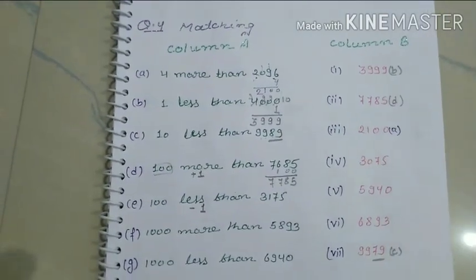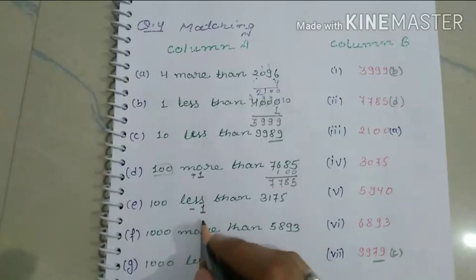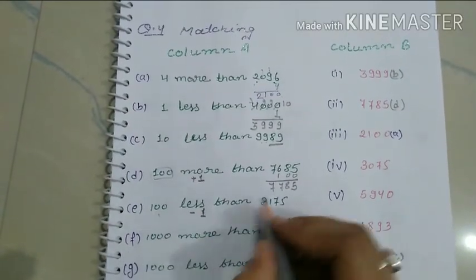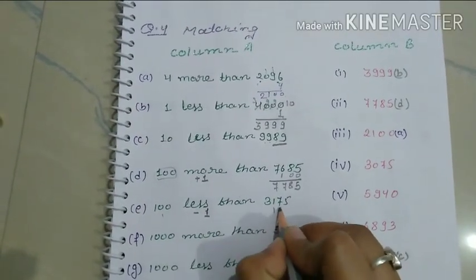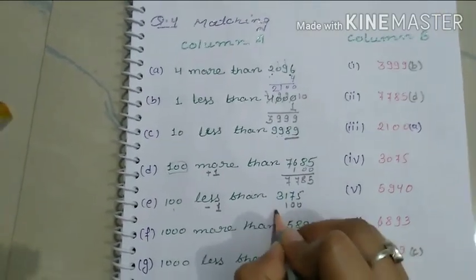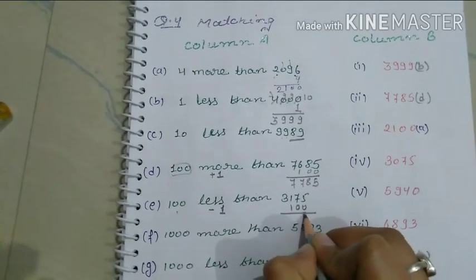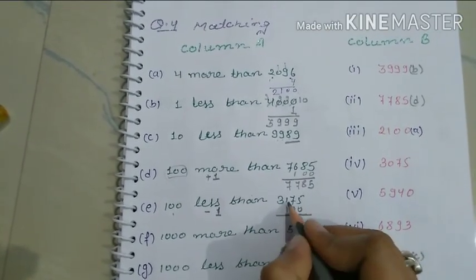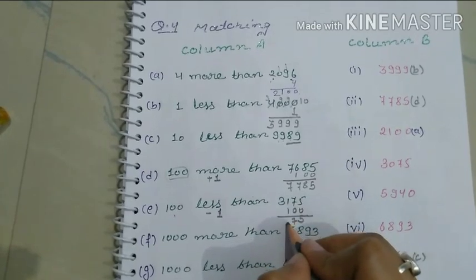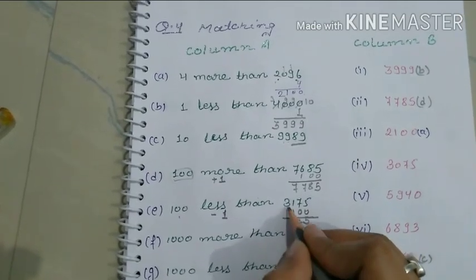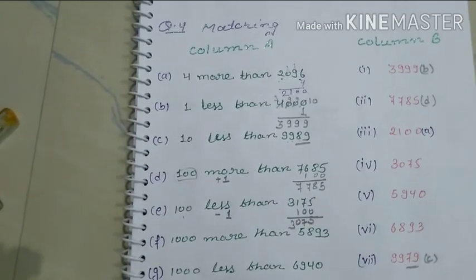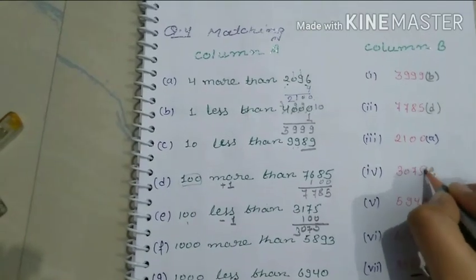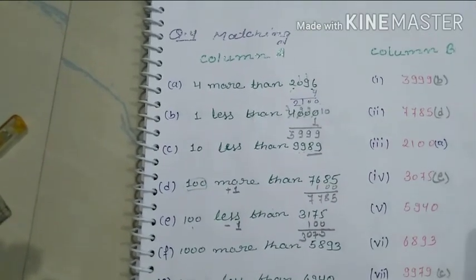Next: subtract 100 from the number. Subtracting 100 gives us 3075.